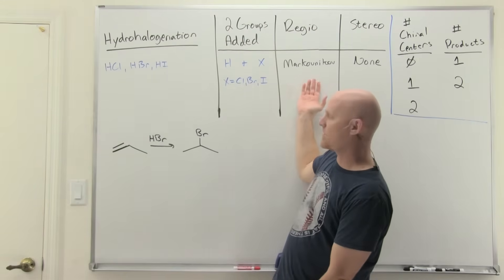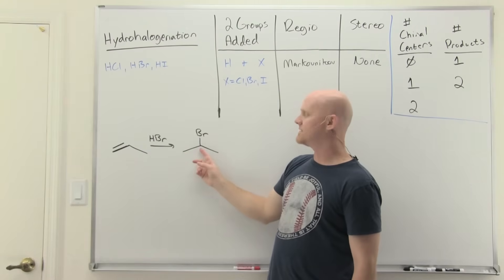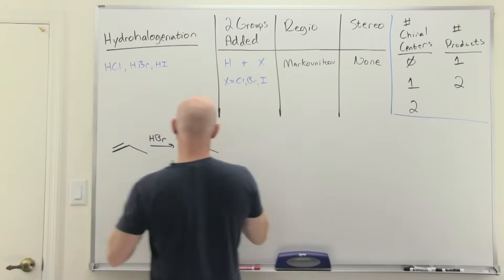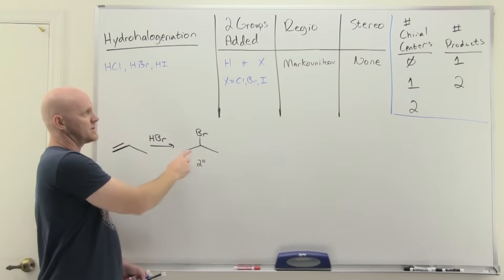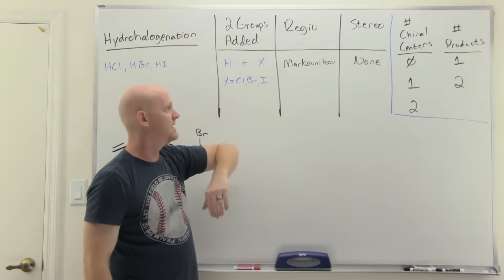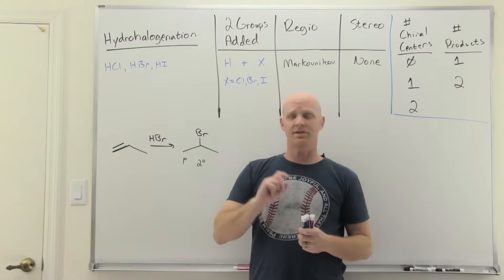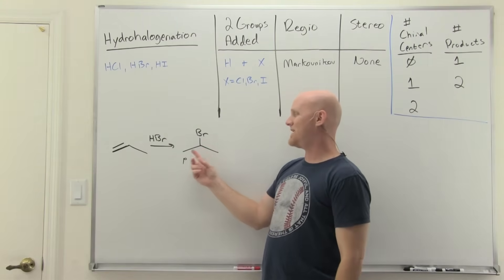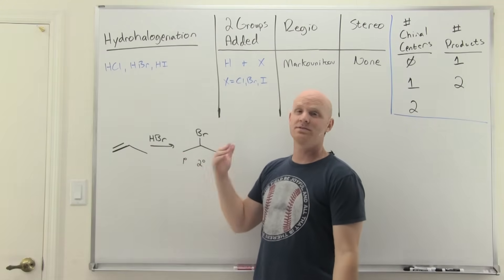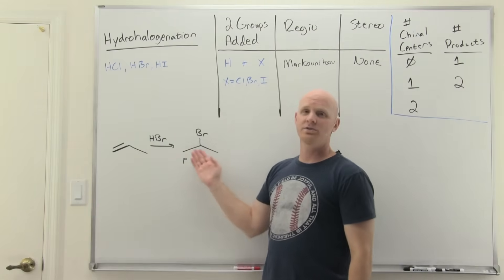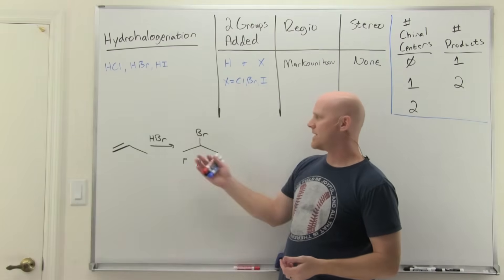Hydrohalogenation goes Markovnikov: in this example, the H ended up on the less substituted side and the bromine on the more substituted side — H on the primary carbon, bromine on the secondary carbon. As for stereoselectivity, there is none. The only time we care is if chiral centers are formed, but here where bromine added has two identical methyl groups and where hydrogen added has three identical hydrogens, neither is a chiral center, giving us just one achiral product.